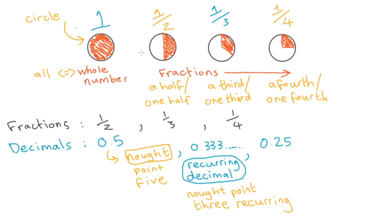So we have different ways of saying numbers. One, two, three, four, five — these types of numbers are called whole numbers. When you see numbers like this, these are called fractions. And when you see numbers like this, these are called decimals. Nought means zero. And there's a special type of decimal called a recurring decimal.